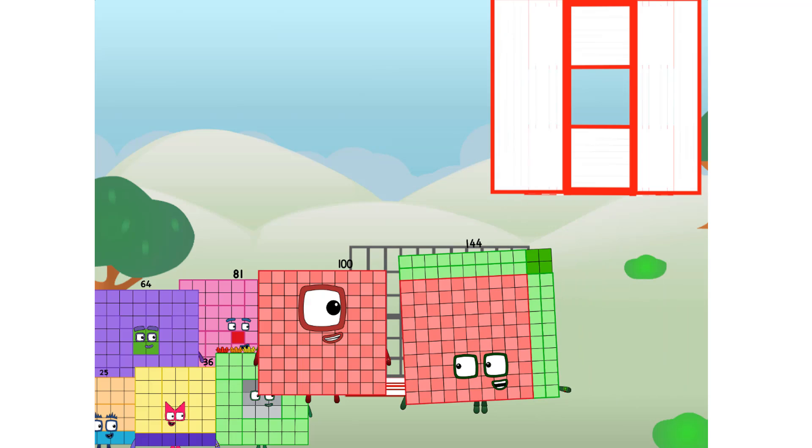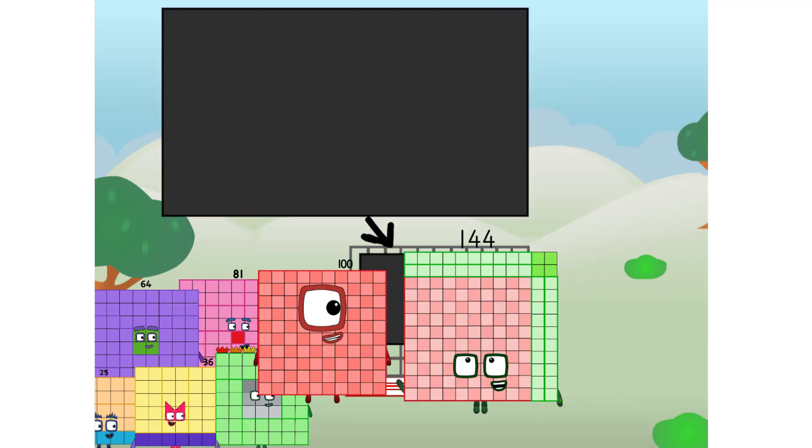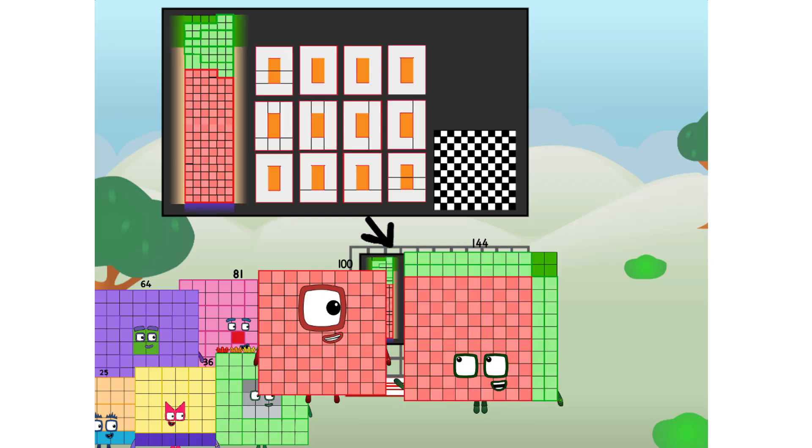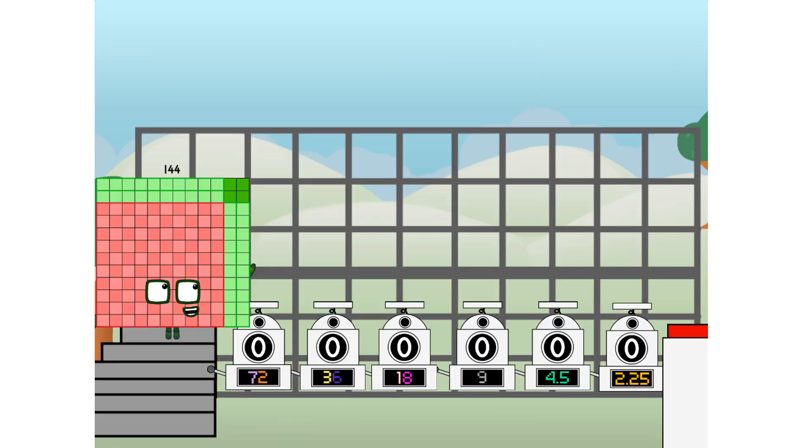There you are, this way. I've got so much to show you. I am 144, and I can be a strong square, a 12 by 12 chess board, a super rectangle, 12 super rectangles, or even a super cuboid. But today I want to show you a little trick I call binary boosters, using the power of doubles to send any number flying.